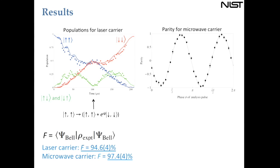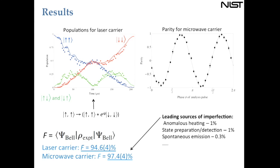To extract the fidelity we need to measure the off-diagonal elements of the density matrix, so we perform a parity experiment. From the parity data, using a laser carrier we get a fidelity of about 95%, and with a microwave carrier it's slightly better. For the laser carrier, enhanced spontaneous emission is the dominant issue. For the microwave case, there's less Raman laser light, so performance is a little better.